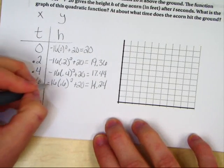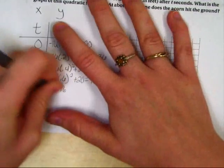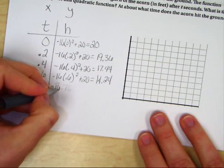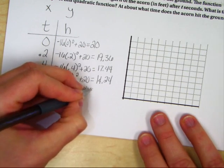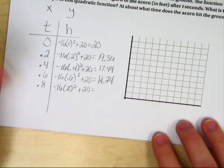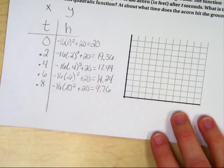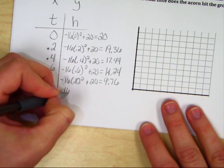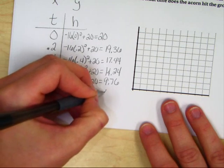Let's plug in 0.8. Oops. I wrote down the answer instead. So negative 16 times 0.8 squared plus 20. Pause the video if you need to copy this down. Now it's going to be all the way down at 9.76 feet. Let's go to a whole second. Negative 16, 1 squared. Shouldn't need a calculator for this one. It's going to be at 4 feet.